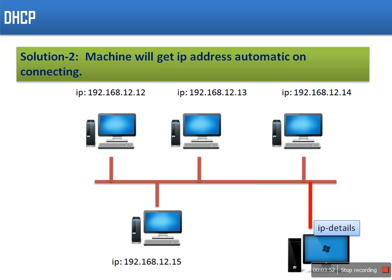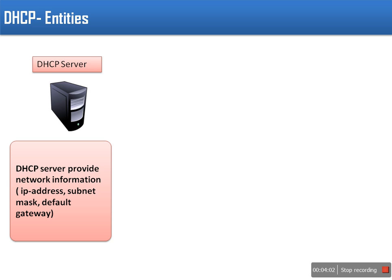We will see how many entities are there in DHCP protocol. The first one is the DHCP server. This server actually provides IP address on demand. Whenever a new machine is connected to the network, it will provide the IP address to that machine for a particular duration — it offers IP addresses on lease. Once that duration is expired, this server can assign the same address to another system. This server also maintains a data storage recording how many addresses are already allotted and how many are available.